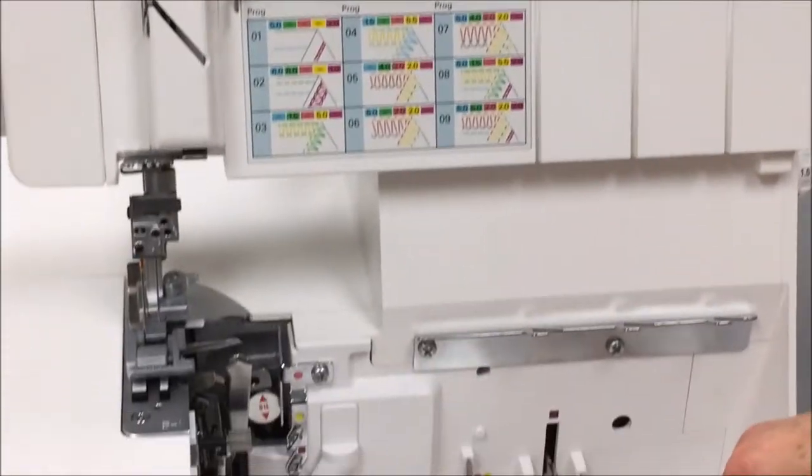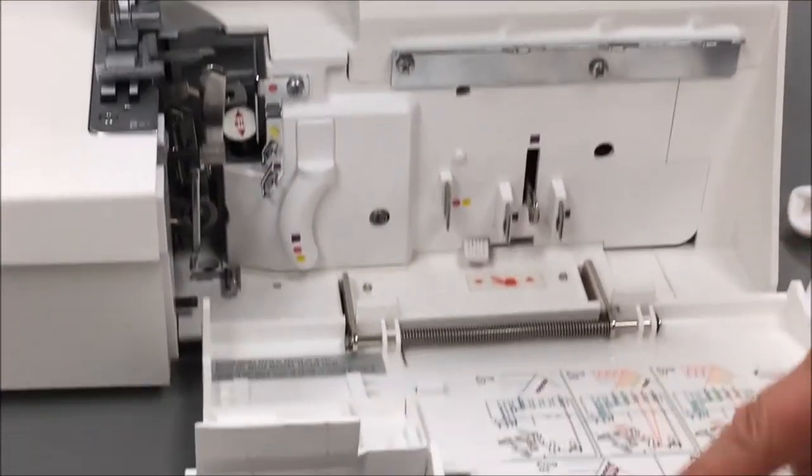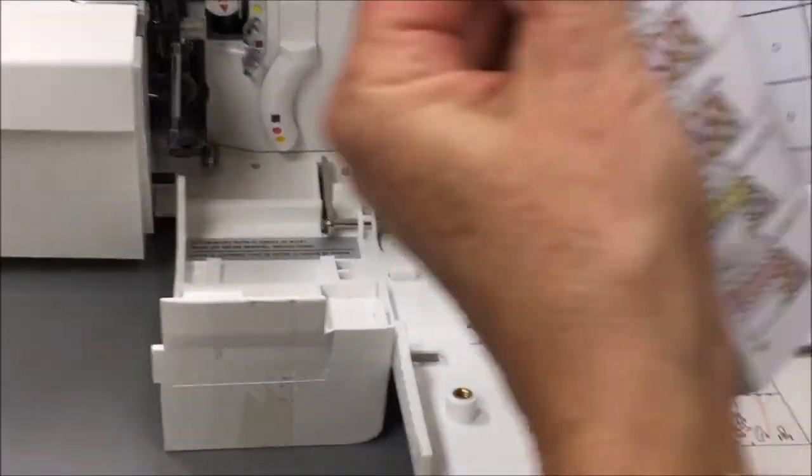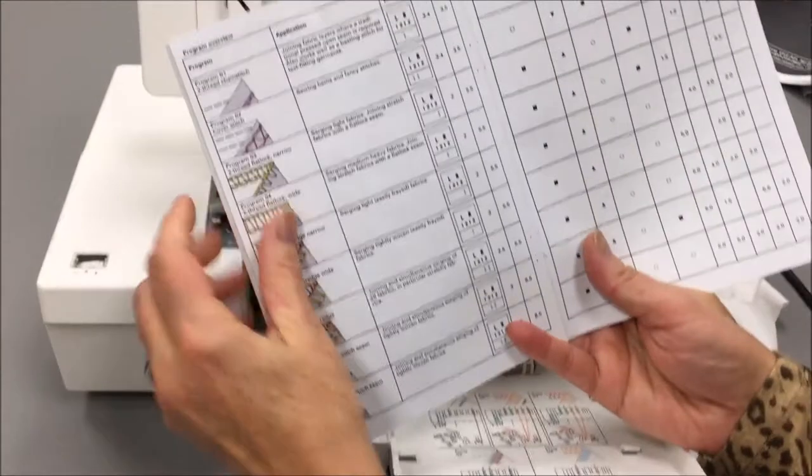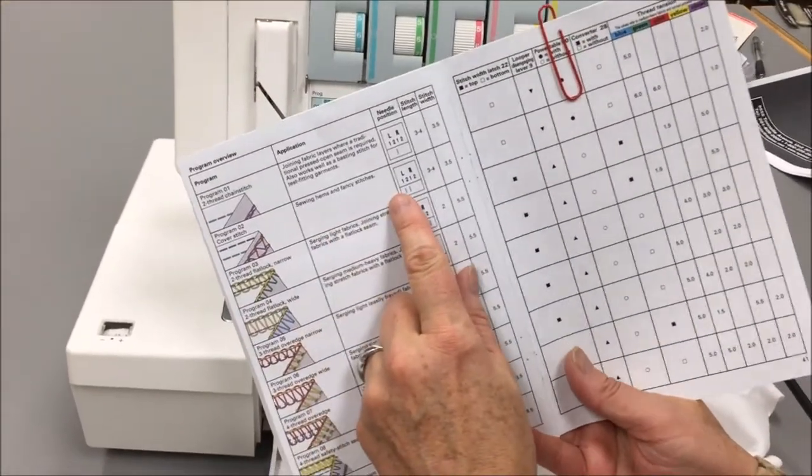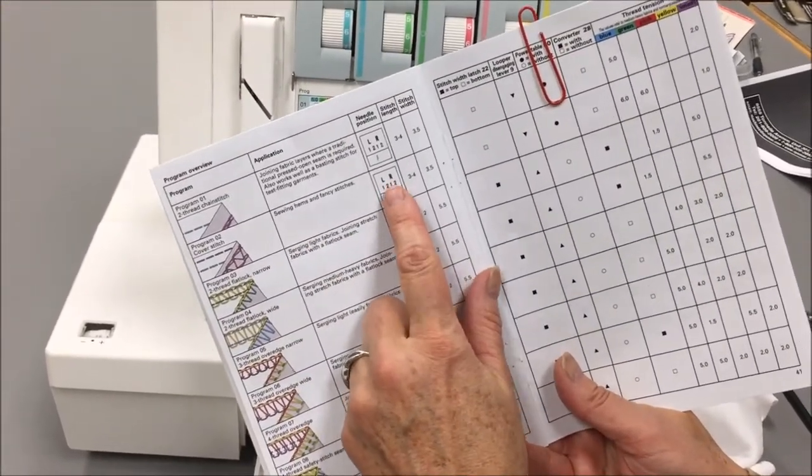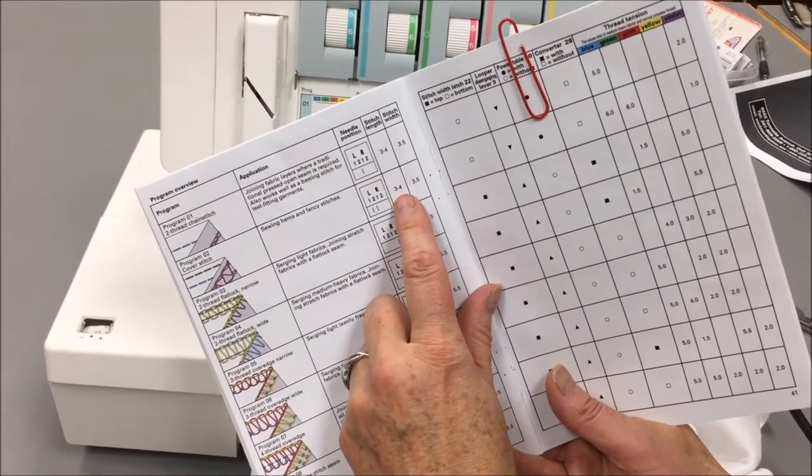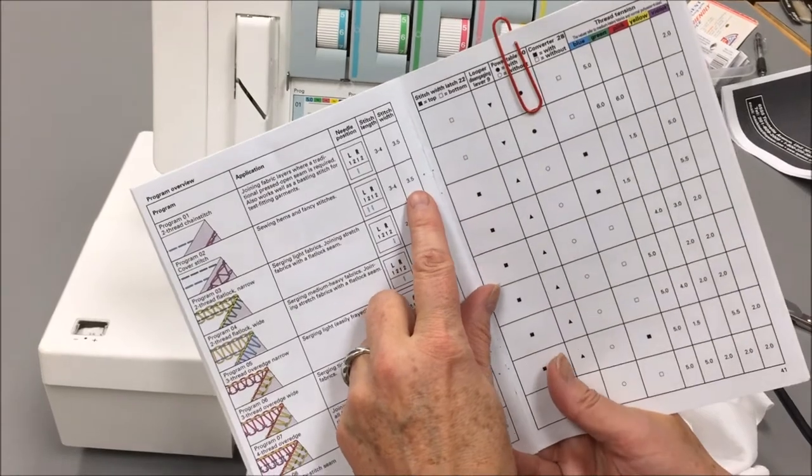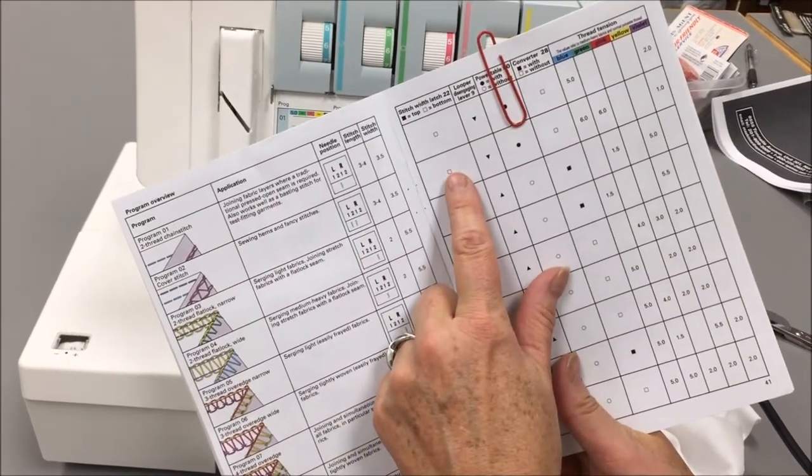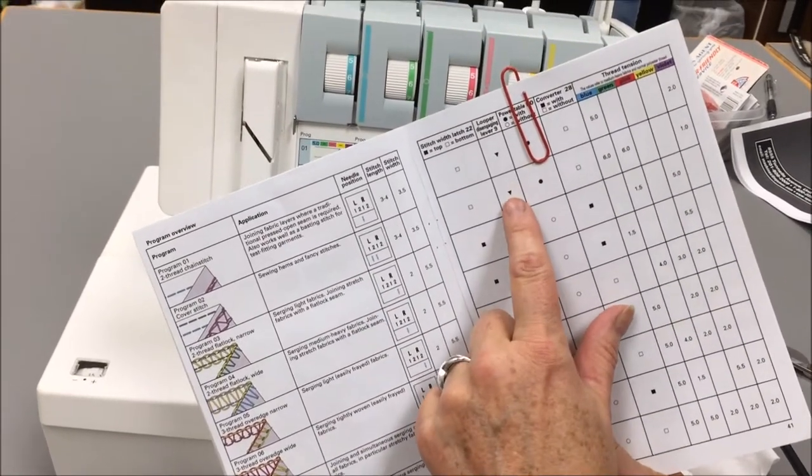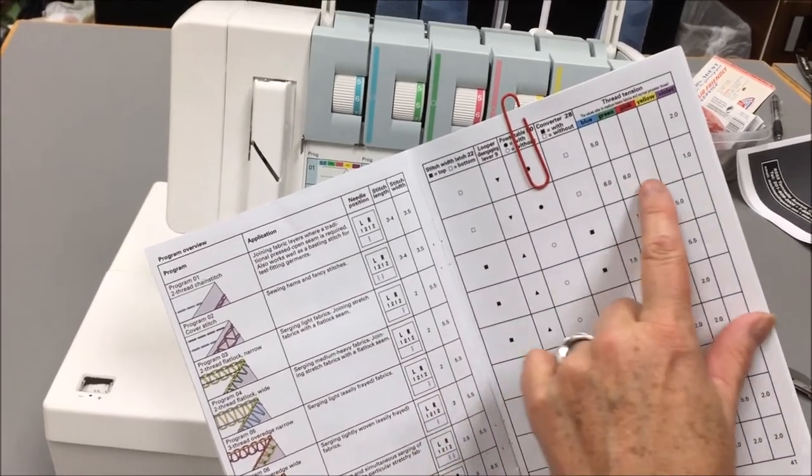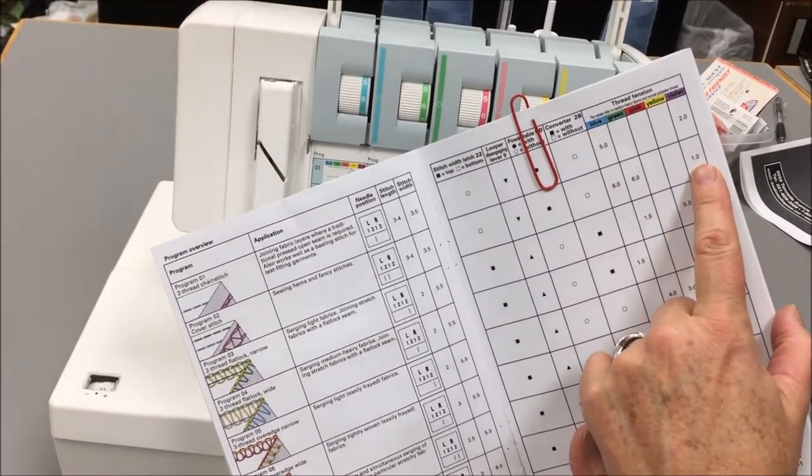We can look down here also for the thread guide, and we can also look in the book, the program overview number two, just letting us know where the needles need to be, what our stitch length is between three and four. I like 3.5. Our stitch width is 3.5. The stitch finger has been removed, the upper looper has been dropped down, and the power table is put on, and it also reviews the tension settings.